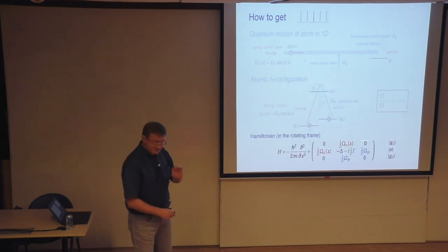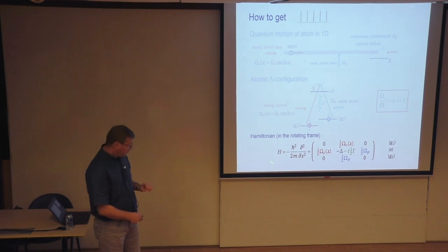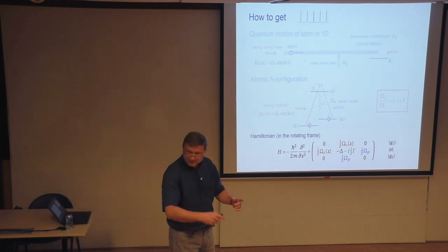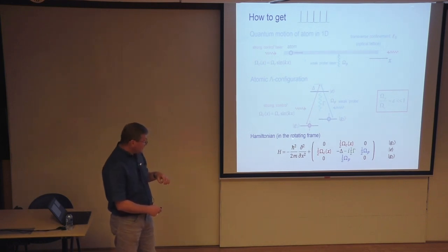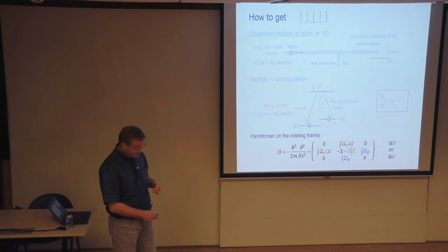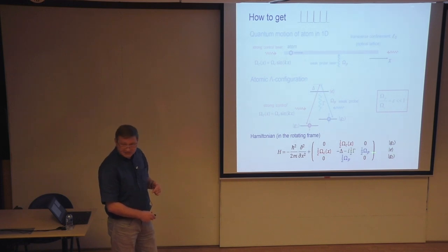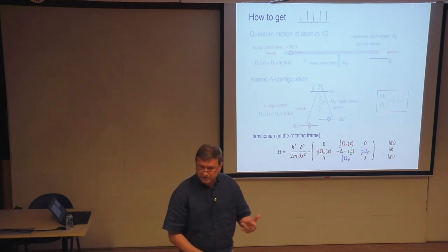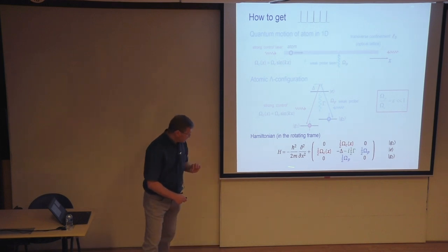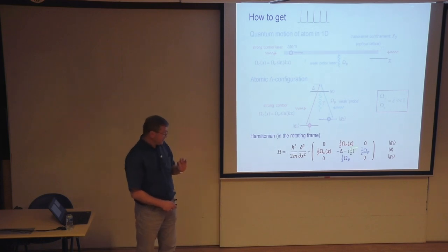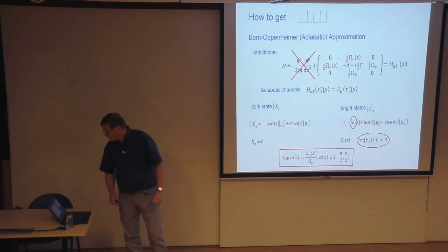The Hamiltonian of this system consists of one-dimensional kinetic energy plus an internal atomic Hamiltonian, written in the rotating frame. The two ground states are now degenerate, and the Rabi frequencies couple these ground states to the excited state. For the excited state, I have minus the detuning plus an imaginary part representing decay — the inverse lifetime of these excited states. Here I have the sinusoidal Ω_c and here the constant Ω_p. Let's see what the properties of this system are.